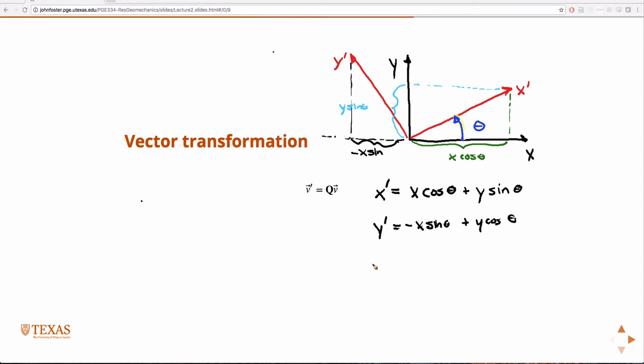So if I just write that in matrix form, x prime, y prime is equal to cosine theta, sine theta, minus sine theta, cosine theta, times x and y, and this is Q.